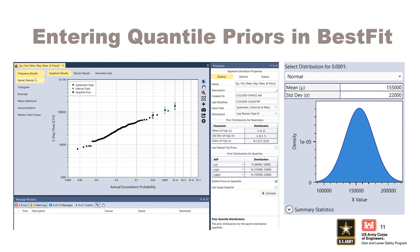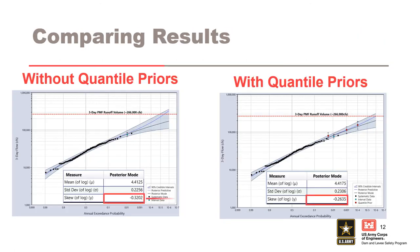After all of the quantile prior distributions are entered, we are ready to run the Bayesian analysis by clicking the Estimate button. Once the Bayesian analysis is complete, we can compare the result with and without the quantile prior distributions.